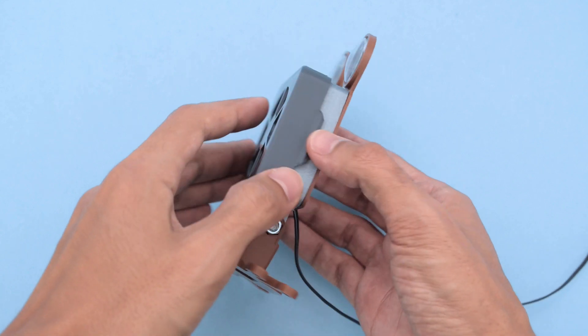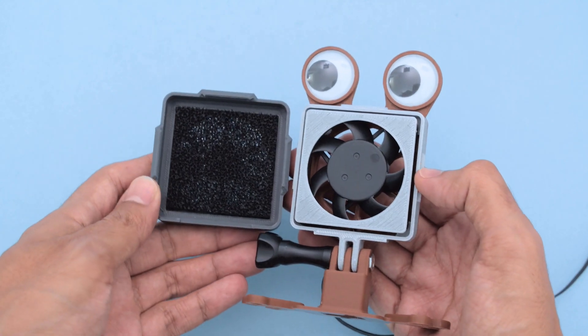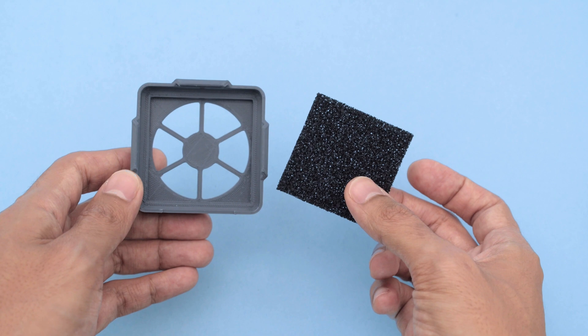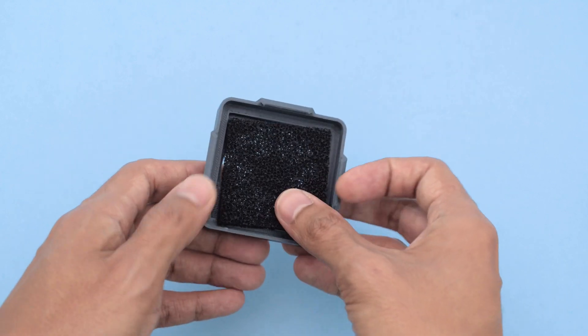The 3D printed enclosure snap fits, so you can easily swap out the carbon filter when it gets dirty. This absorbs solder smoke and will help keep the air clean.